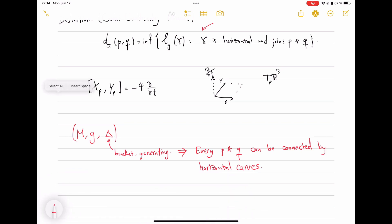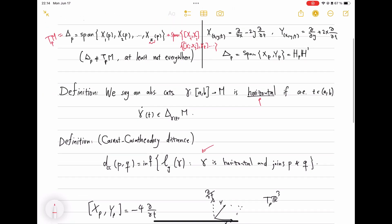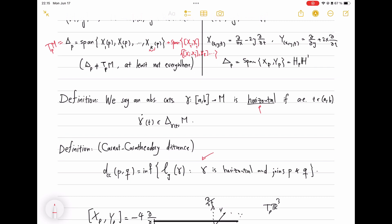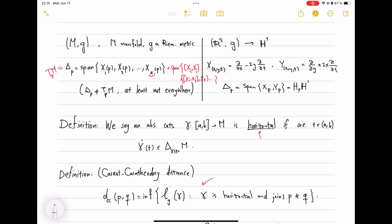So as I said, this was just to say where Heisenberg group stands in terms of general sub-Riemannian manifolds. Sub-Riemannian manifolds are also called Carnot-Carathéodory metric spaces or Carnot-Carathéodory spaces. So that makes Heisenberg group a very special example of general sub-Riemannian manifolds.